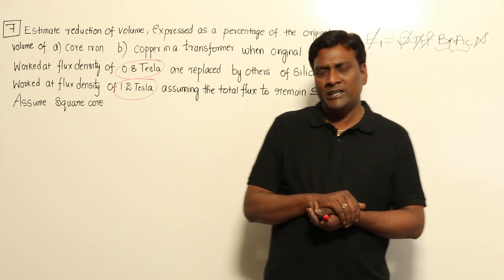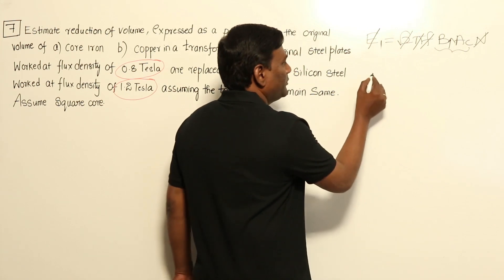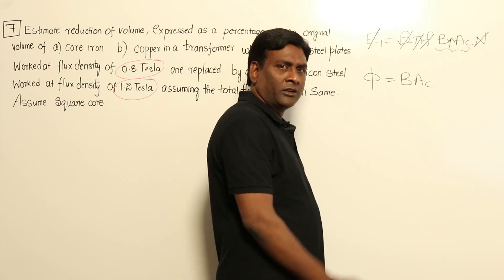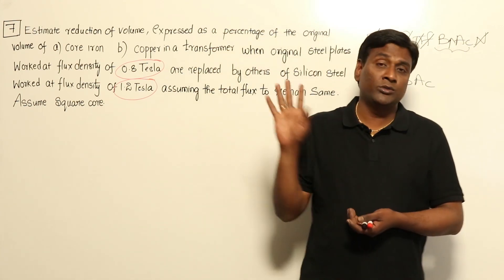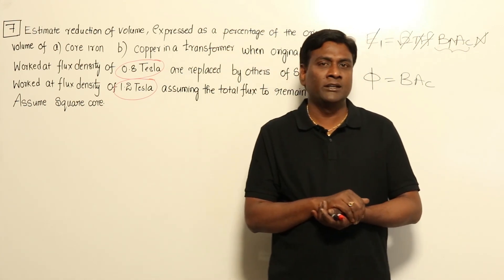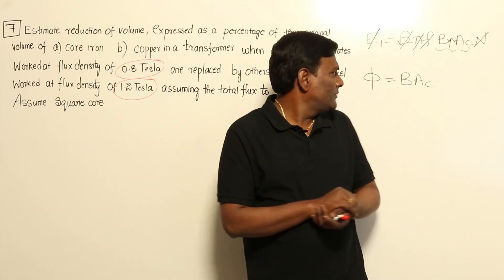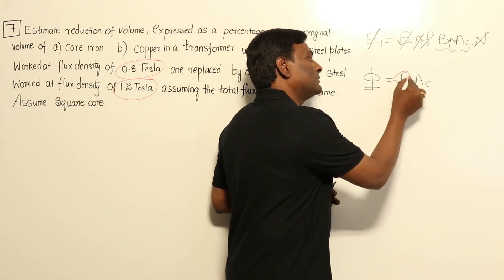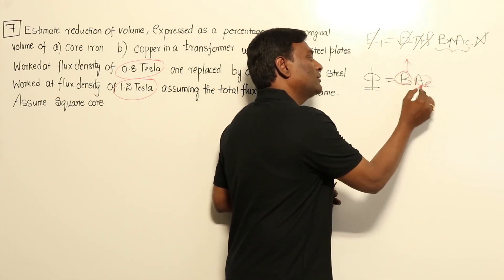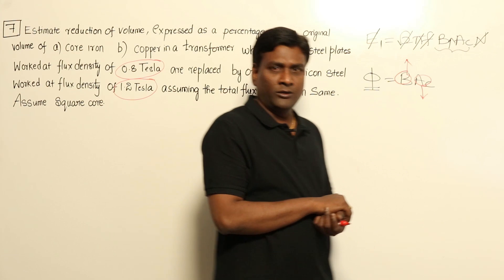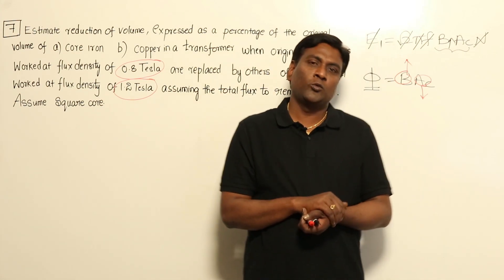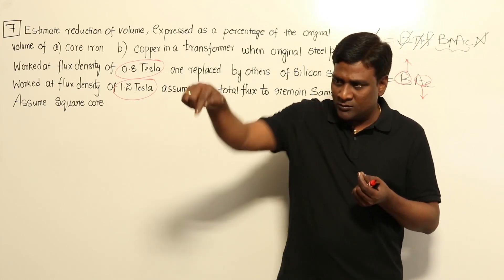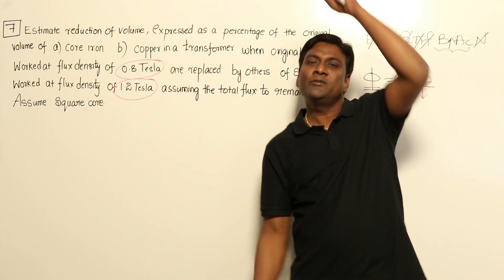Flux is constant. So for a given flux — flux is flux density into area of cross section of the core. As I discussed previously, we should not depend upon formulas; machines is beyond formulas. For a given flux, if flux density is increased, area of cross section of the core will be reduced. So if area of cross section of the core is reduced, the volume of the core — which is area of cross section of the core multiplied by length of the limb — will also be affected.